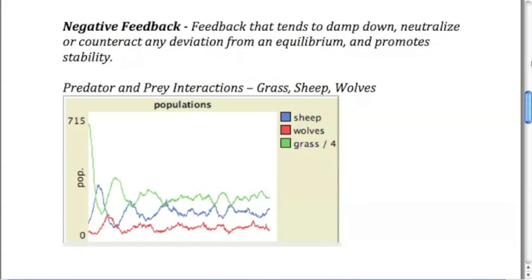So with that first example, let's take a look now and see if we can classify it. And here's a very common one in environmental situations, which is negative feedback. Negative feedback tends to damp down or neutralize or counteract any deviation from equilibrium.